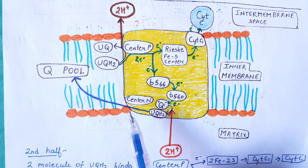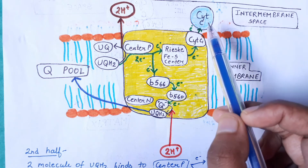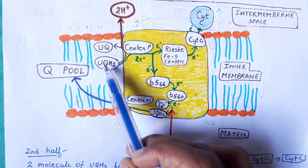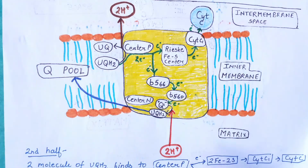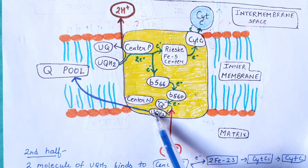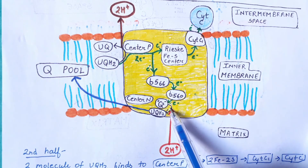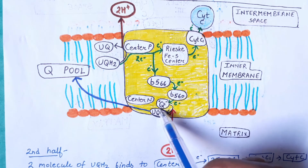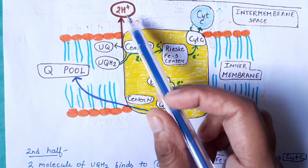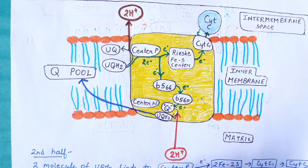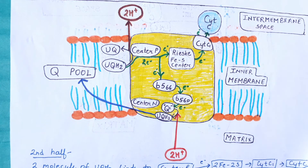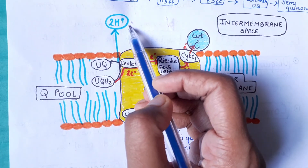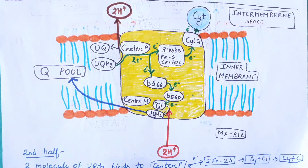In this way, there is recycling of electrons because cytochrome C can carry only a single electron at a time. The second electron from ubiquinol must be conserved by this mechanism. During the formation of ubiquinol at center N, two more protons are taken up. Combining both halves: four protons total are pumped into the intermembrane space — two in the first half and two in the second half.